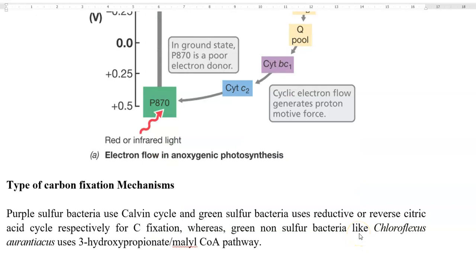The final part of photosynthesis is carbon fixation using the energy and reducing equivalents synthesized by the photophosphorylation process. Purple sulfur bacteria commonly use the Calvin cycle, whereas green sulfur bacteria use the reductive or reverse TCA cycle for fixing carbon. The other group, such as green non-sulfur bacteria like Chloroflexus and Aurantiochytrium, uses the 3-hydroxypropionate or malonyl-CoA pathway to fix carbon dioxide into cell carbon.